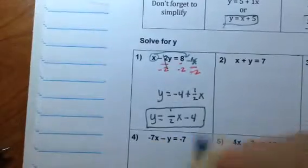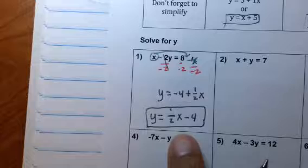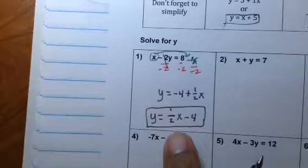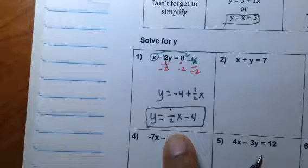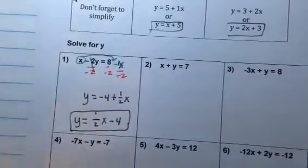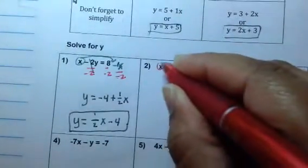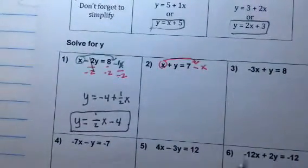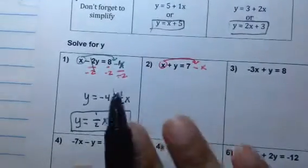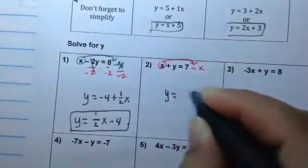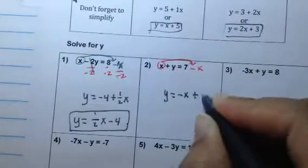The reason why we're writing it with the X first is because that'll come in handy when we're solving this for Y in slope-intercept form — about 2 to 3 weeks from now when we're starting linear equations. Okay, number 2: we have a positive X again, so we're going to move it and it's going to change to a negative X. The answer would be Y equals negative X plus 7.